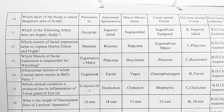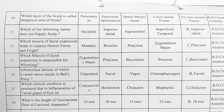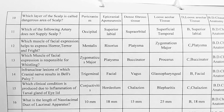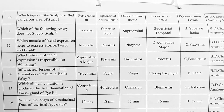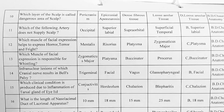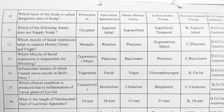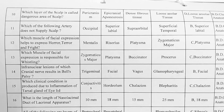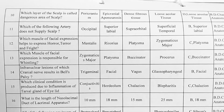Next. Which muscle of facial expression helps to express horror, terror and fright? Options — A: mentalis, B: risorius, C: platysma, D: zygomaticus major. Option C is correct, platysma.